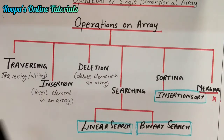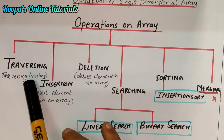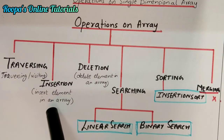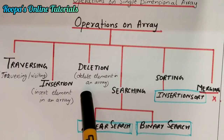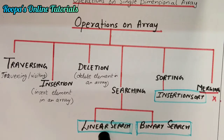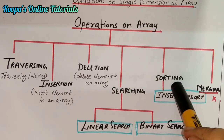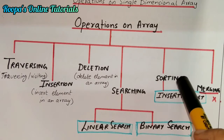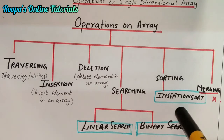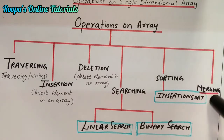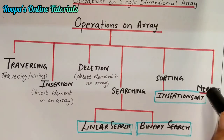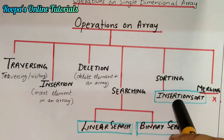You can see the different operations in the chart. First, we have traversing — visiting each and every element of an array. Then the second operation is insertion, to insert an element. Then we have deletion, to remove an element. We have two types of searching: linear search and binary search. For sorting, you have insertion sort in your scope of studies, though there are others like merge sort and bubble sort. Lastly, you have merging — we'll just learn the definition; there are no algorithms or programs on merging.